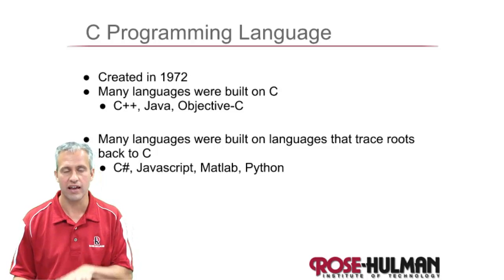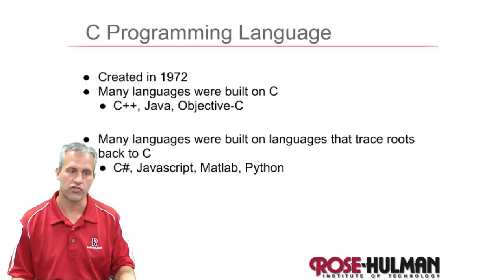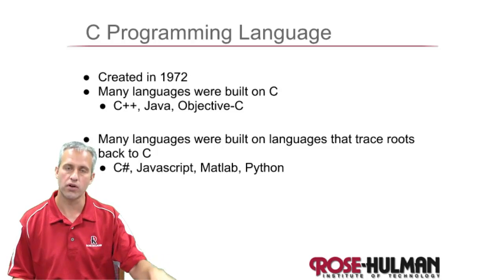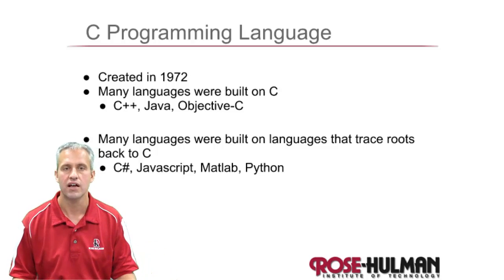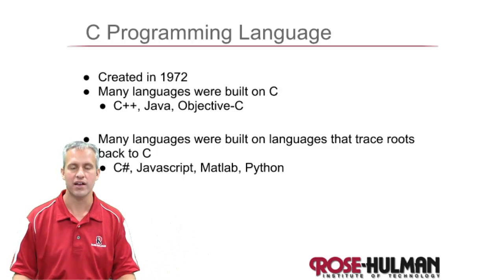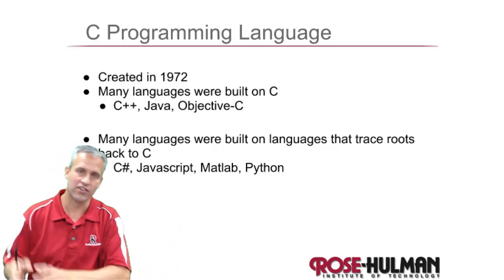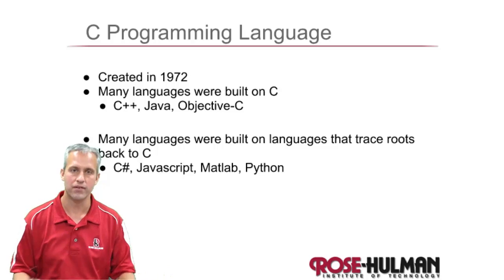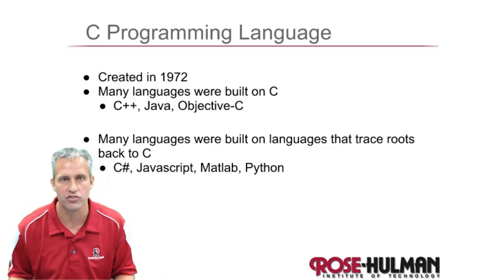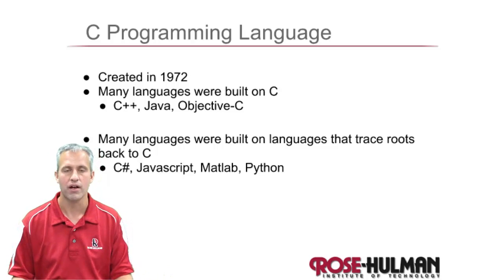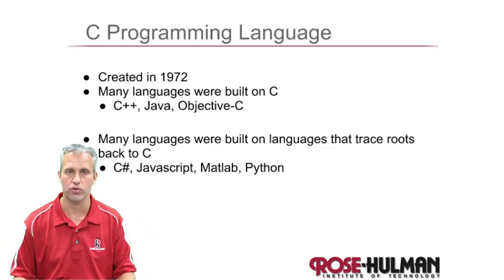C is actually the ancestor to a lot of more modern languages. So like Java, C++, Objective-C — they were built right on top of C. And even the languages that are built today are based on languages that are based on C. So MATLAB, Python, JavaScript, C Sharp — C is kind of the root of everything.